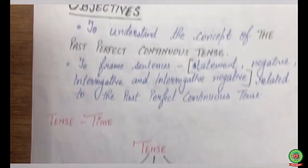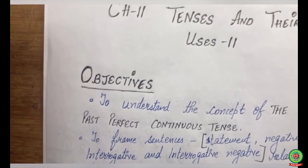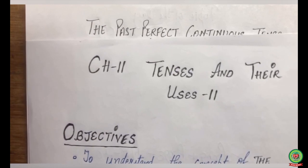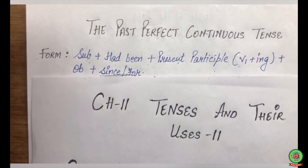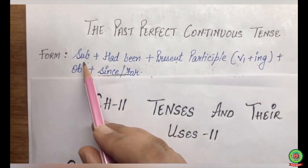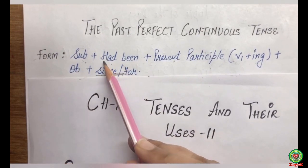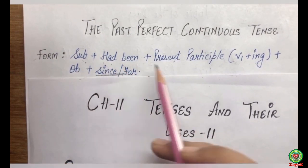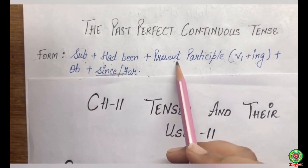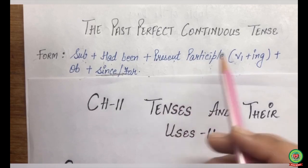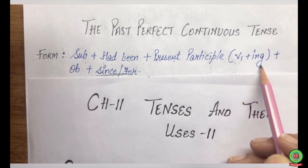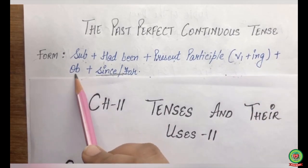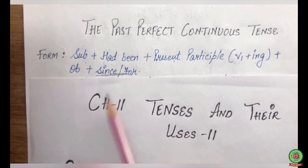The structure of your past perfect continuous tense is: you begin with your subject, then you add 'had been' plus your present participle — that is the first form of verb plus '-ing' — plus object, and then 'since' or 'for'.